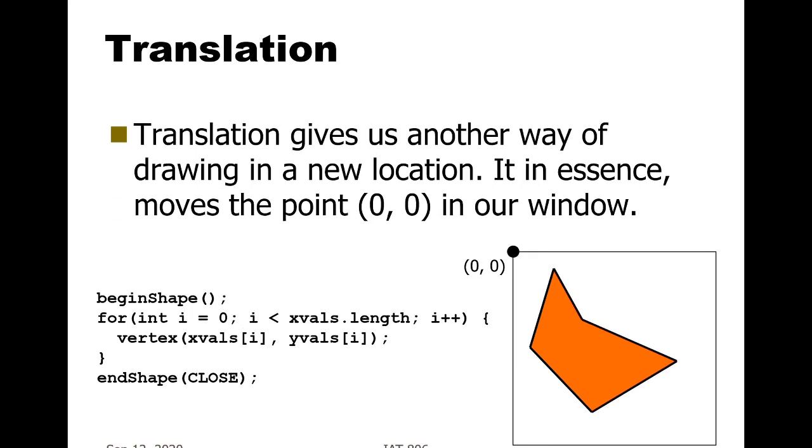The first of these transformations are techniques for telling the computer graphics system to change the location where subsequent things are going to be drawn. The first of these is translation. Translation gives us another way of drawing in a new location. In essence, it moves the origin or coordinate system by the amount that you say, such that subsequent calls are interpreted as taking place in a new location.